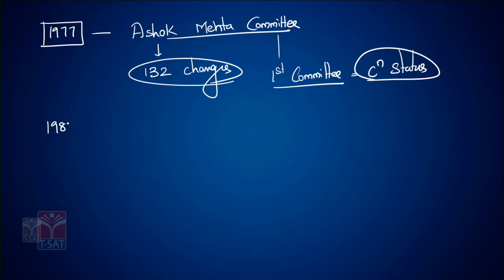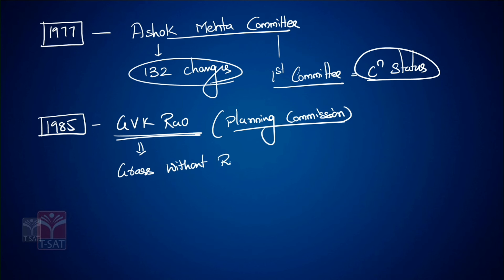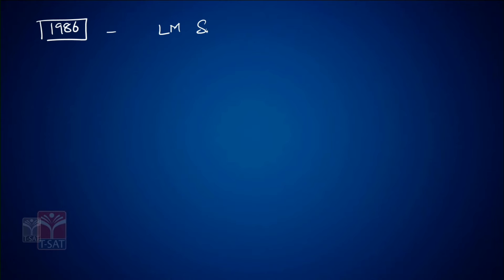In 1985, the GVK Rao Committee was constituted by the Planning Commission to review the Panchayati Raj institutions. GVK Rao Committee said the Panchayati Raj institutions in India are like grass without roots — meaning institutions without power and authority.